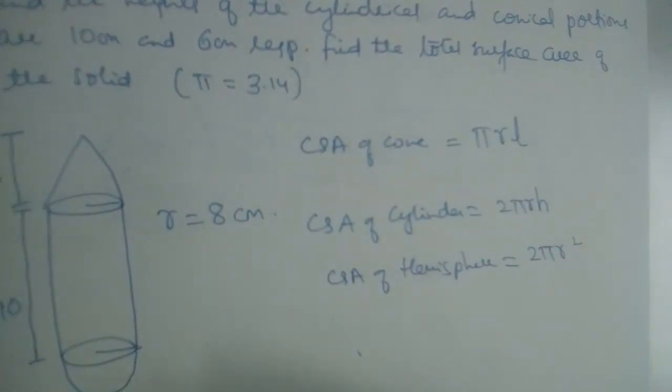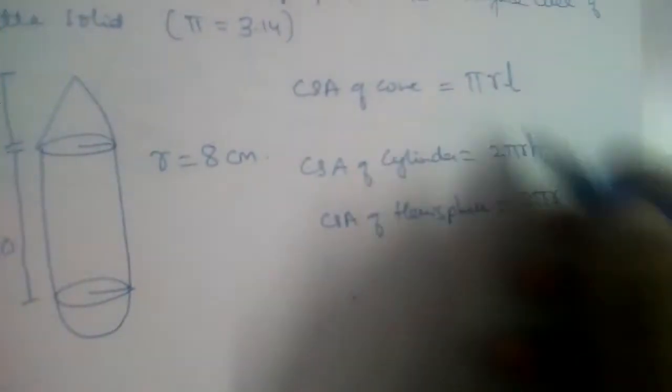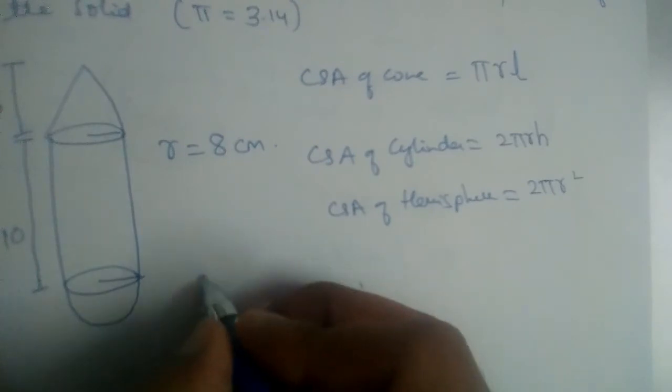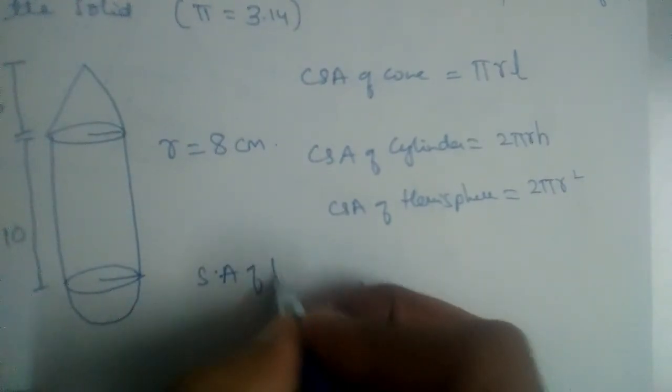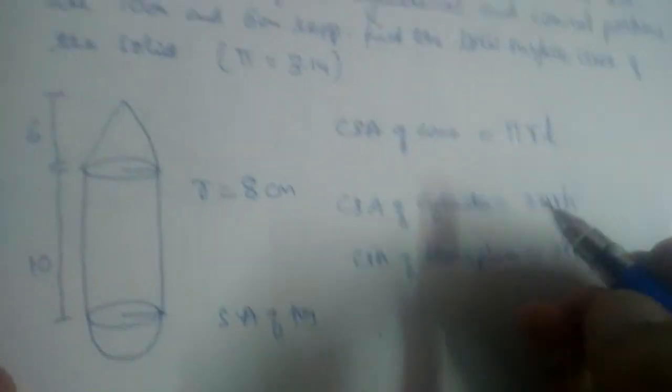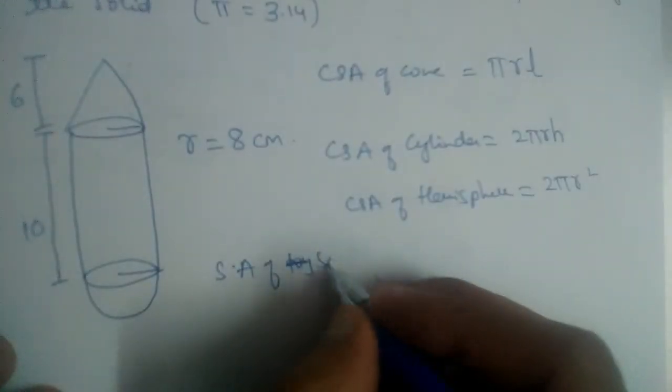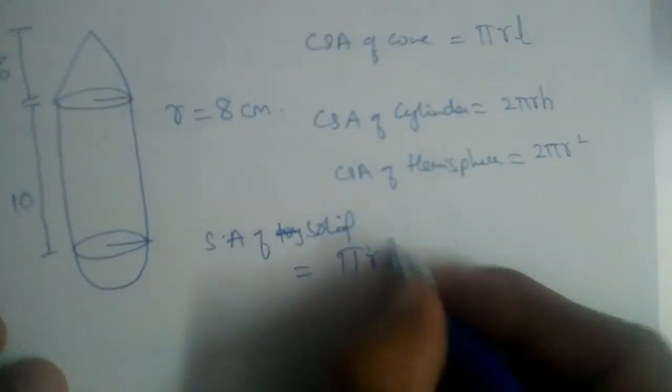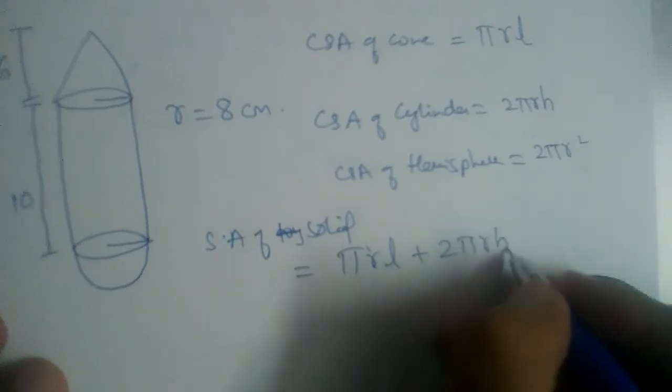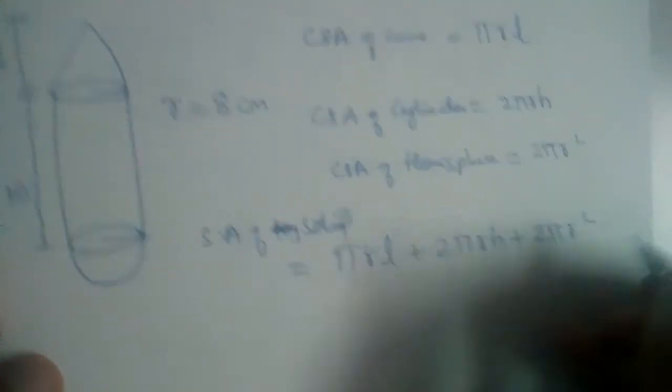We should add all these three. Surface area of solid is equal to πrL plus 2πrH plus 2πr².